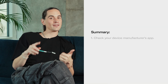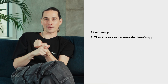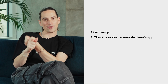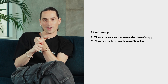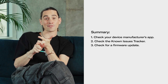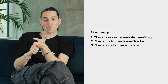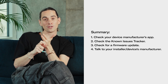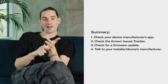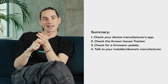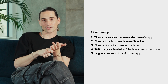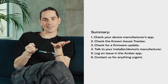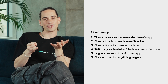As a quick summary: number one, check the app for your inverter, battery, or device. Number two, check our known issues tracker on our website. Number three, check for any available firmware updates. Number four, talk to your installer or directly with the manufacturer of your device. Number five, if it's non-urgent, log an issue via the Amber app. Or number six, get in contact with us if it's a little bit more urgent.